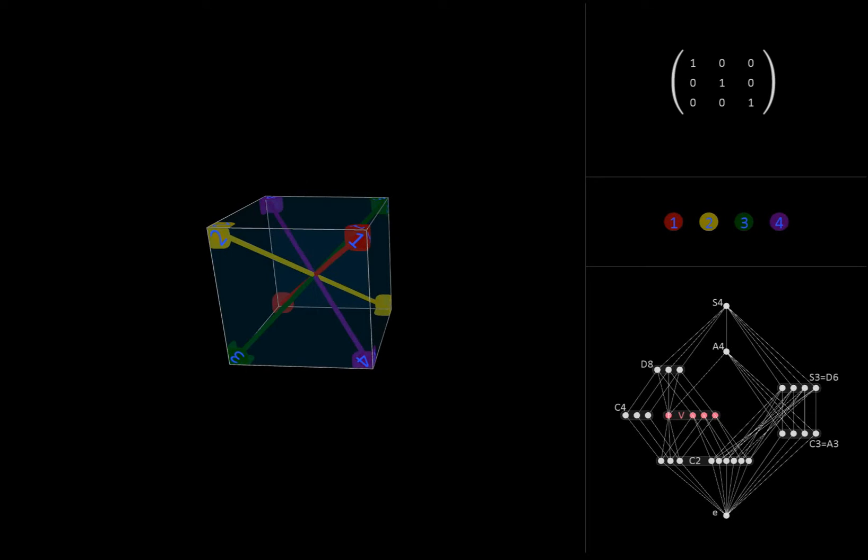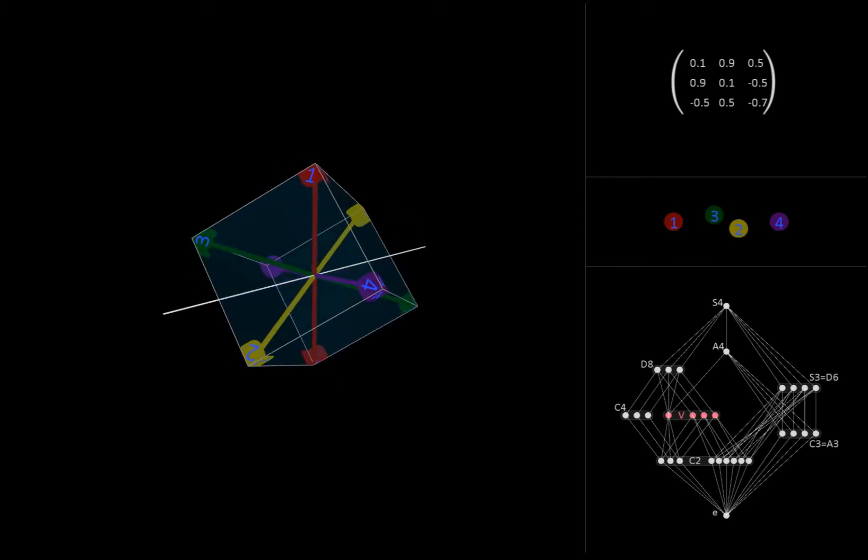Now, notice that the cube has 12 edges, four parallel to the z-axis, four parallel to the y-axis, and four parallel to the x-axis. We can draw six lines connecting midpoints of opposite edges. For example, here are the two lines passing through midpoints of opposite vertical edges. Going back to the other Klein group we looked at, we might describe it as being generated by 180 degree turns about these two lines.